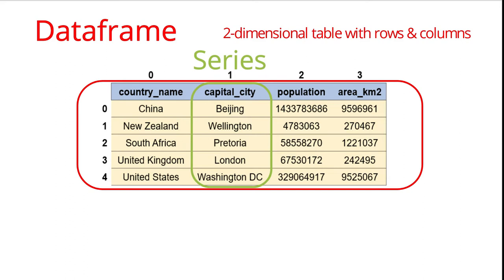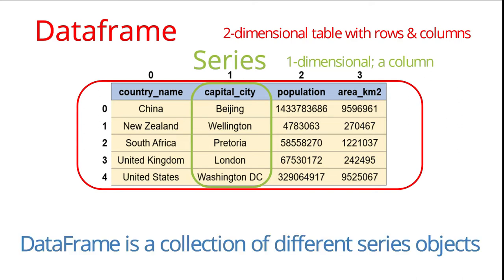You can think of a DataFrame as a spreadsheet file or a relational database table. Each column in our DataFrame is called a Series object, which is basically a one-dimensional structure that has a descriptive name and a similar data type for all its values. For example, the country name is a Series object with a text data type, while the population is another Series object with a numerical data type. You can think of a DataFrame as a collection of different Series objects.